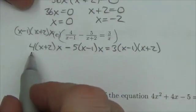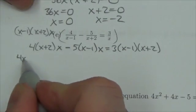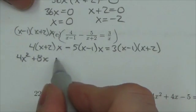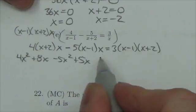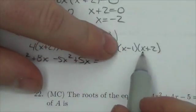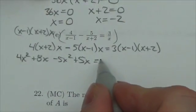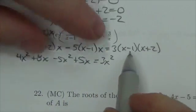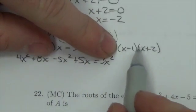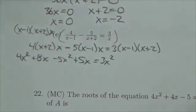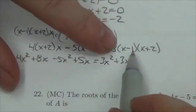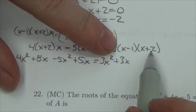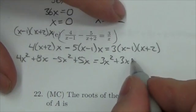Now this needs to be expanded out. This is going to end up getting me 4x squared plus 8x minus 5x squared plus 5x equals - x times x is x squared, but there's a 3 out front, so 3x squared. Positive 2x minus x is positive 1x times 3 is plus 3x. Minus 1 times 2 is negative 2, times 3 is negative 6.